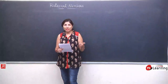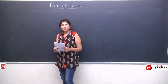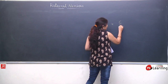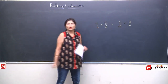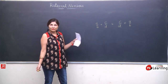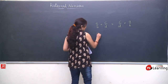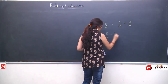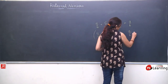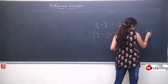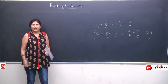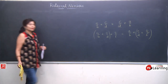So, dosto, we have thoroughly learnt commutativity and associativity of rational numbers. Commutativity means if we are having two rational numbers like a upon b and c upon d, we can write them in either order and there will be no effect on the answer — LHS will equal RHS. Similarly, we studied associativity: if we have three rational numbers and we change the position of the bracket, there is no effect on the answer. This is your commutative property and associative property.